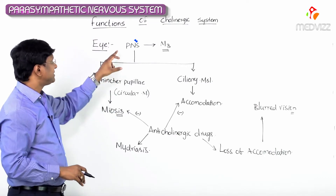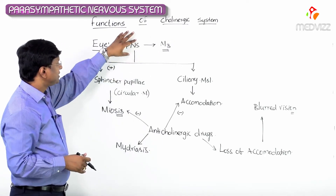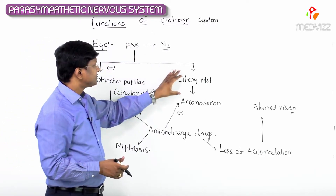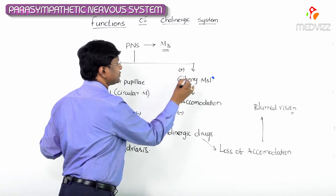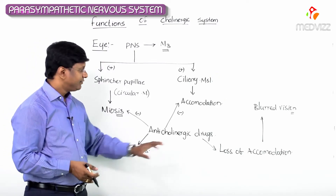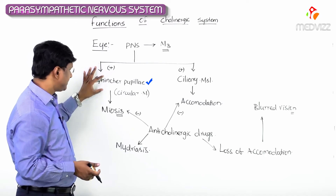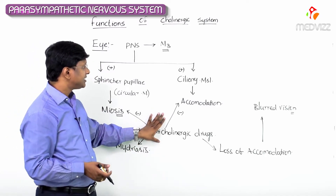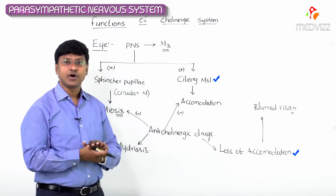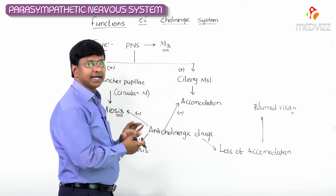To summarize: the parasympathetic nervous system acts on the eye via M3 receptors. It stimulates the sphincter pupillae, resulting in constriction of the pupil — miosis — and causes stimulation of the ciliary muscle, resulting in accommodation. Anticholinergic drugs inhibit contraction of the sphincter pupillae, resulting in mydriasis, and inhibit contraction of the ciliary muscle, resulting in loss of accommodation and blurred vision.